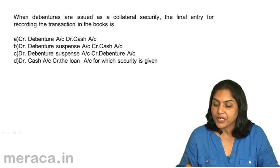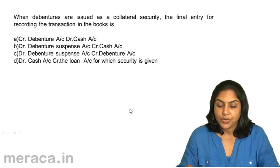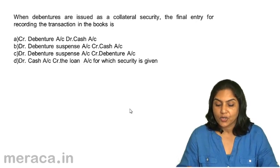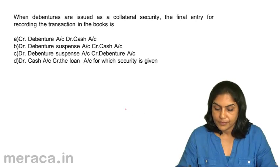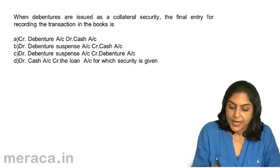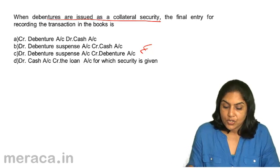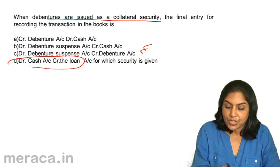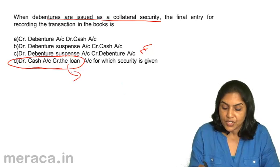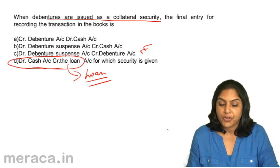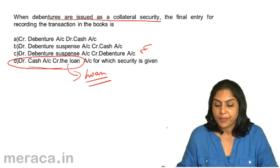Next, when debentures are issued as collateral security, the correct entry for recording the transaction is: C. Debenture suspense account debit to debentures. The entry — cash account debit to loan — is for the loan for which security is given, not for the issue of debentures. For issuing debentures as collateral security, the correct entry is C: debenture suspense account debit to debentures.